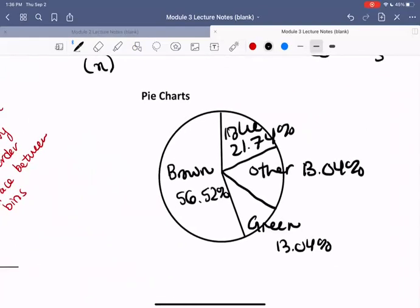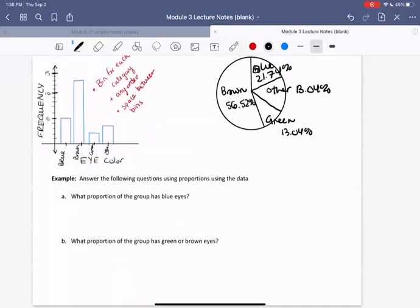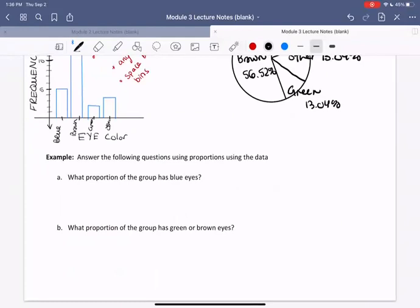So take a moment and pause the video and make sure you've been able to draw a pie chart. And double check that all of the wedges are accurate according to their relative frequency. All right, so on this page, we just have two final questions. So in this example, we want to answer the following questions using proportions from the data.